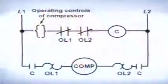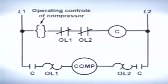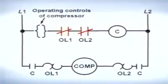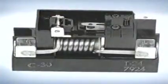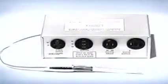The other type of commonly used overload is the pilot duty overload. Unlike the line brake overload, the pilot duty overload breaks the control circuit, not the power circuit of the device being controlled. Notice that the overload contacts are located in series with the contactor coil, not the compressor itself. Three common types of pilot duty overload are the current type, the magnetic overload, and the electronic overload.